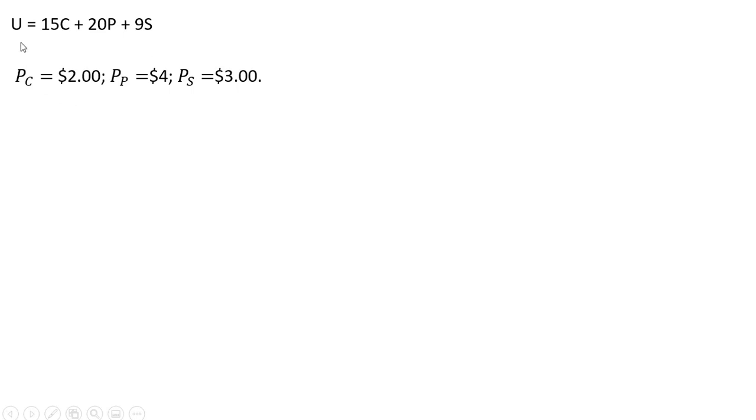The key things here are the utility function and the various prices. We need to find which good gives the most marginal utility per dollar. Let's get the marginal utilities. With a perfect substitutes utility function, the marginal utilities are just the coefficients in front of the variables.